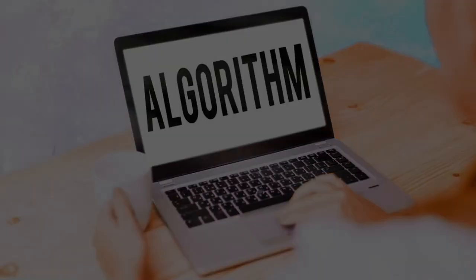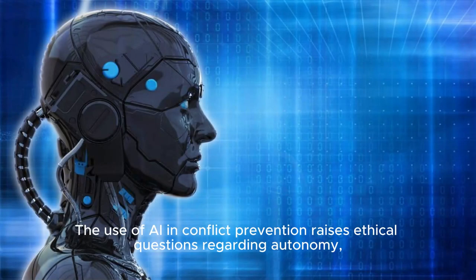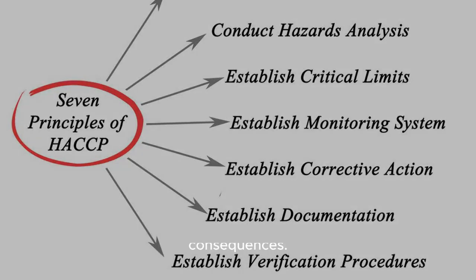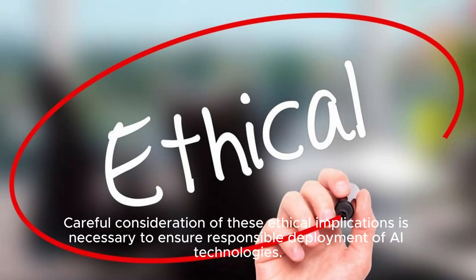Ethical Concerns: The use of AI in conflict prevention raises ethical questions regarding autonomy, accountability, and the potential for unintended consequences. Careful consideration of these ethical implications is necessary to ensure responsible deployment of AI technologies.